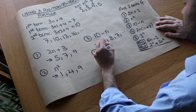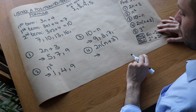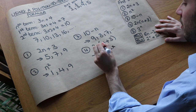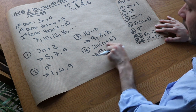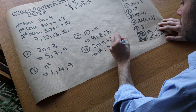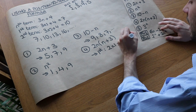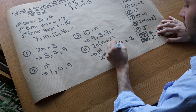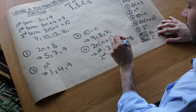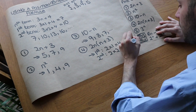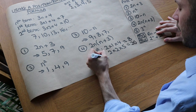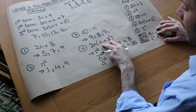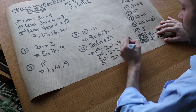Next we have 2n times (n plus 3). Let's work this out. The first term: 2 times 1 times (1 plus 3) — that's 2 times 1 times 4, which equals 8. The second term: 2 times 2 times (2 plus 3) — that's 2 times 2 times 5, which equals 20. The third term: 2 times 3 times (3 plus 3) — that's 2 times 3 times 6, which equals 36.